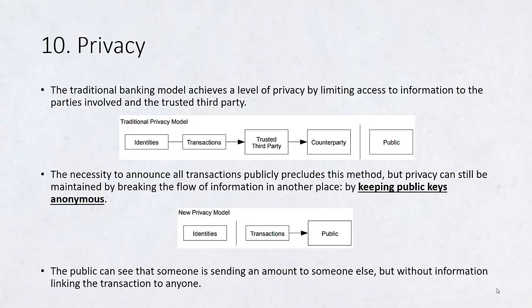This is similar to the level of information released by stock exchanges, where the time and size of individual trades — the tape — is made public, but without telling who the parties were. As an additional firewall, a new key pair should be used for each transaction to keep them from being linked to a common owner. Some linking is still unavoidable with multi-input transactions, which necessarily reveal that their inputs were owned by the same owner. The risk is that if the owner of a key is revealed, linking could reveal other transactions that belong to the same owner.